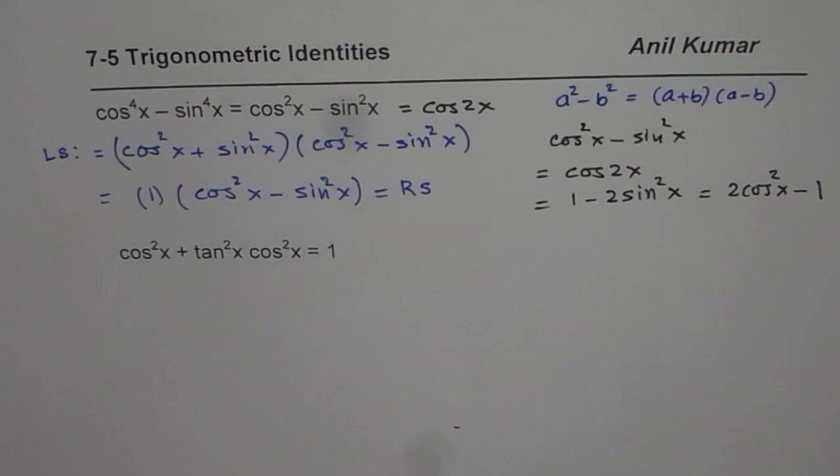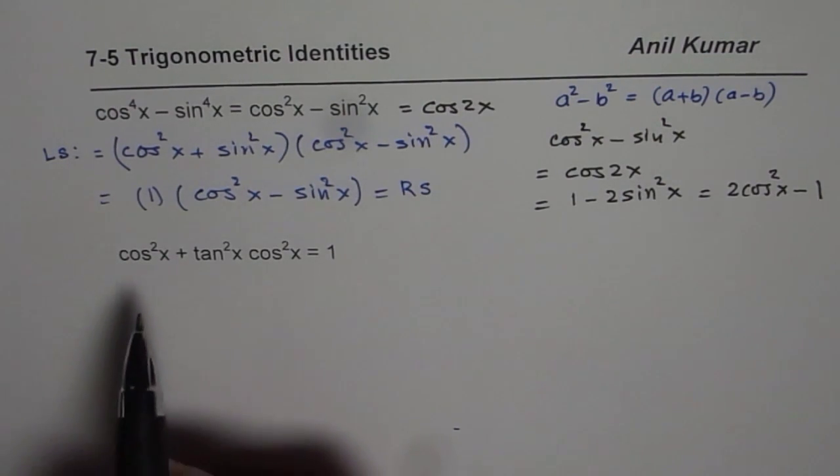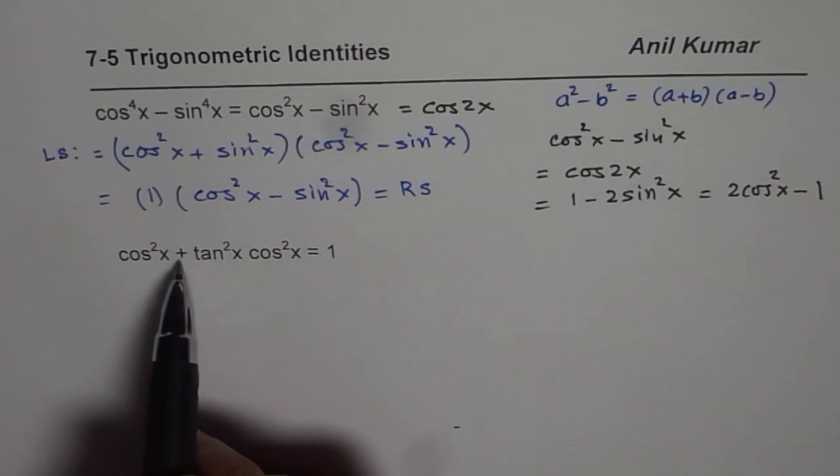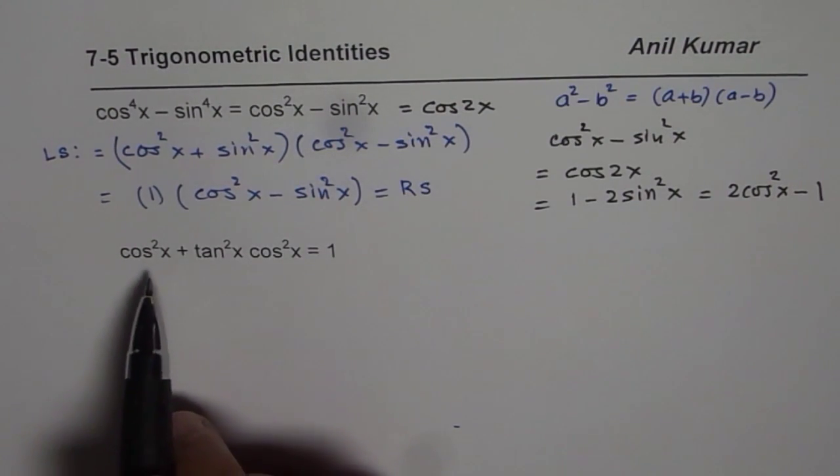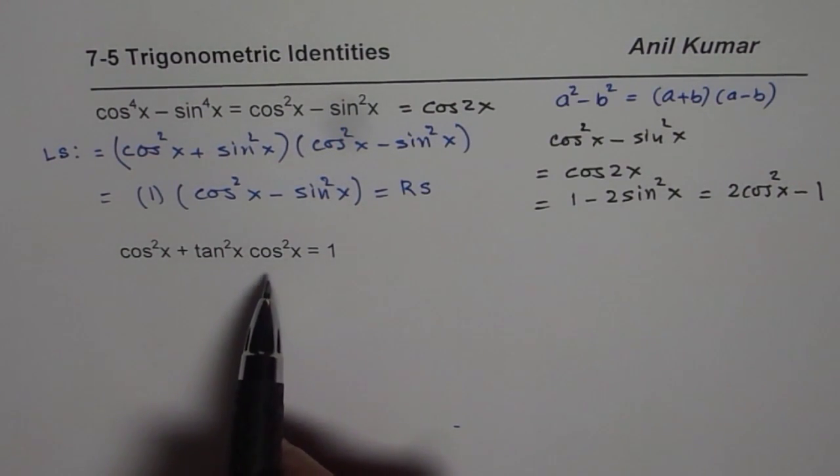Now let's look into the next one. We have cos square x plus tan square x times cos square x equals to 1. Now in this we will use factoring techniques.